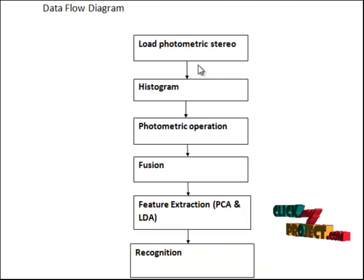This is the block diagram of our project. First we will load the photometric stereo, a technique in computer vision for estimating the surface normals of objects by observing that object under different lighting conditions. Given a reflectance map, we can determine a unique value of radiance and image intensity per known surface orientation.